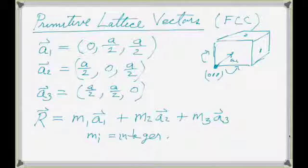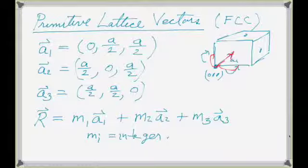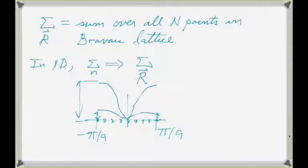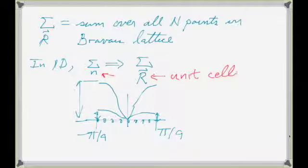A1, A2, and A3 are the vectors connecting our origin — the A atom at (0,0,0) — to the three face atoms. Any translation by a linear combination of these three vectors brings you back to an equivalent point in the lattice. When we write sums over all lattice vectors, it's equivalent to what we did in 1D when we wrote sums over N. Now R represents all unit cells in 3D space.